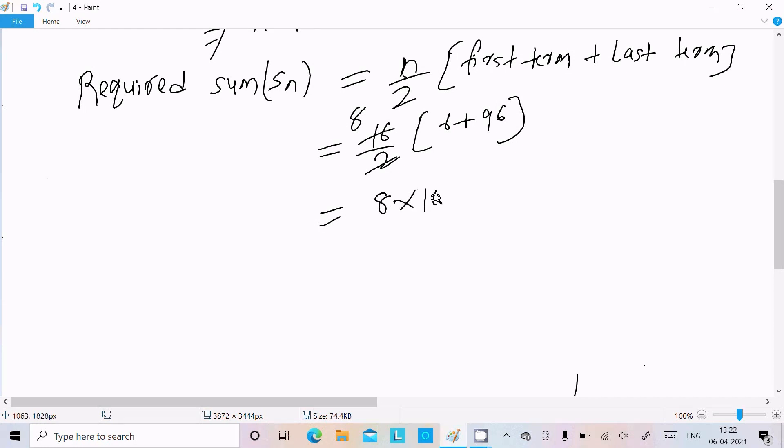So this becomes here 102. Now multiply 102 with 8, this is 816. So here 816 is the answer of this question.